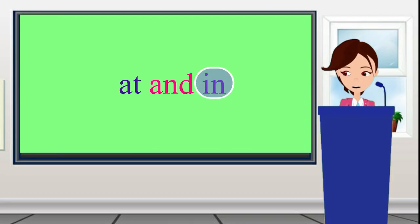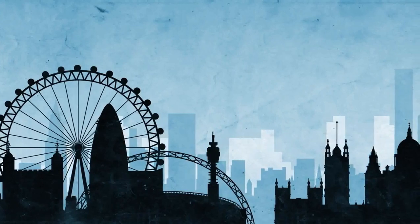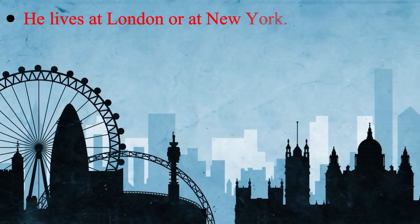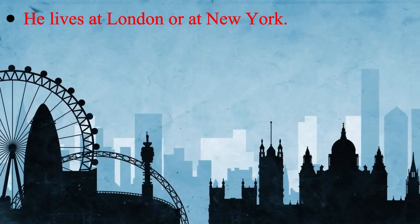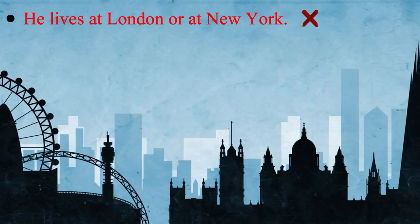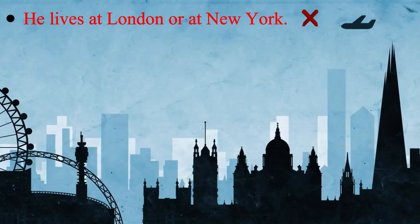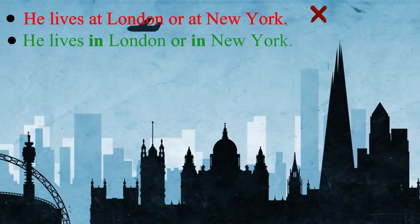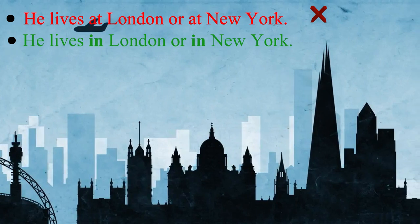IN is generally used before the names of countries and large cities. For example, saying 'he lives at London or at New York' would be wrong. We should say: he lives in London or in New York.